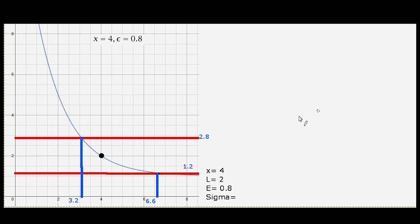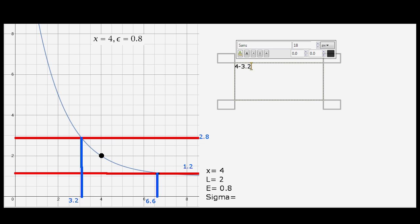Now to find delta, we find the distance the bounds are away from x. The lower boundary is at 0.8 units away, while the upper is 2.6 units away. Delta calls for the maximum distance, which means the smallest delta value. So our delta here happens to be 0.8.